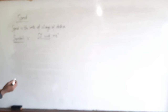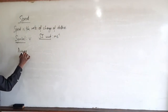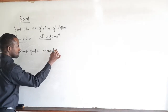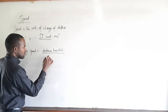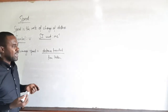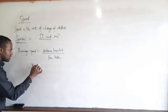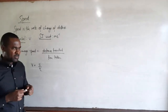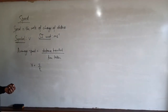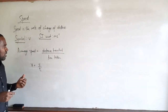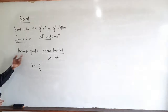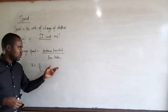The symbol for speed is V and the SI unit of speed is meters per second. To calculate average speed: average speed is equal to the distance travelled over time taken. Using symbols, V equals S over T. We can relate this formula to a distance-time graph — the gradient of a distance-time graph gives speed.